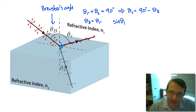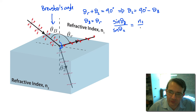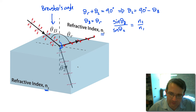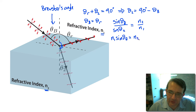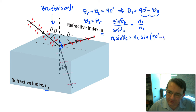Using Snell's law: sin(theta_b) divided by sin(theta_2) equals n2 over n1, where n1 is the refractive index of the original medium and n2 is the new medium. Rearranging: n1·sin(theta_b) = n2·sin(theta_2). Substituting theta_2 = 90° − theta_b gives n1·sin(theta_b) = n2·sin(90° − theta_b).